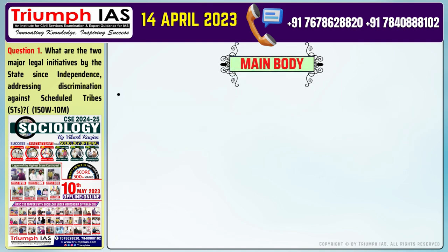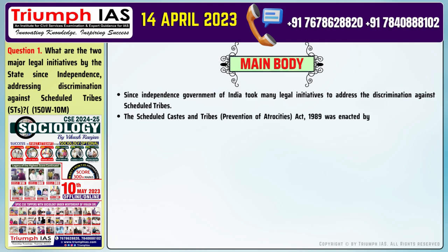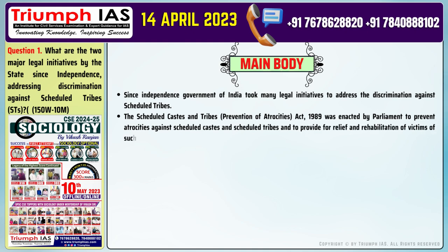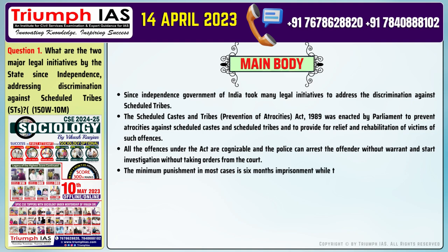The main body of the answer: Since independence, the Government of India took many legal initiatives to address discrimination against Scheduled Tribes. The Scheduled Castes and Tribes (Prevention of Atrocities) Act, 1989, was enacted by Parliament to prevent atrocities against Scheduled Castes and Scheduled Tribes and to provide for relief and rehabilitation of victims. All offences under the Act are cognizable and the police can arrest the offender without warrant and start investigation without taking orders from the court. The minimum punishment in most cases is six months' imprisonment while the maximum is five years with fine. The provision for anticipatory bail is not available to the offender under the Act.